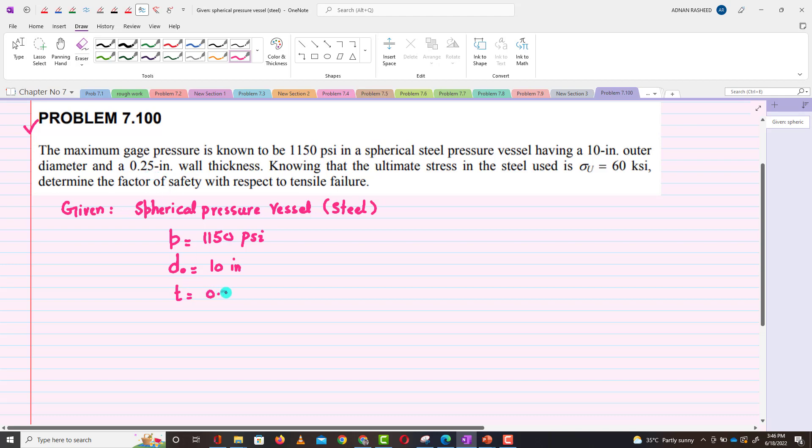σ ultimate = 60 ksi, and this 60 ksi is equal to 60 × 10³ psi. Here, what we have to find is the factor of safety.